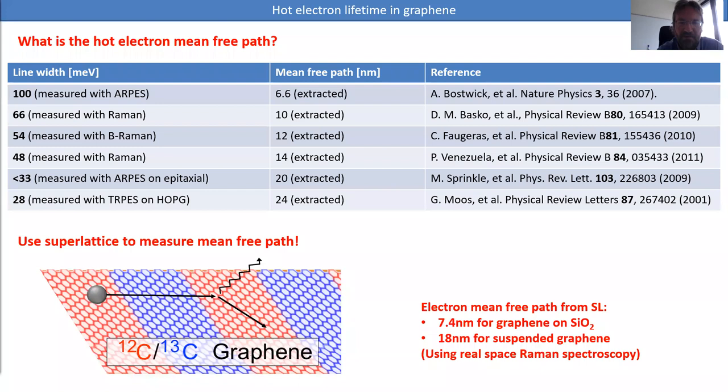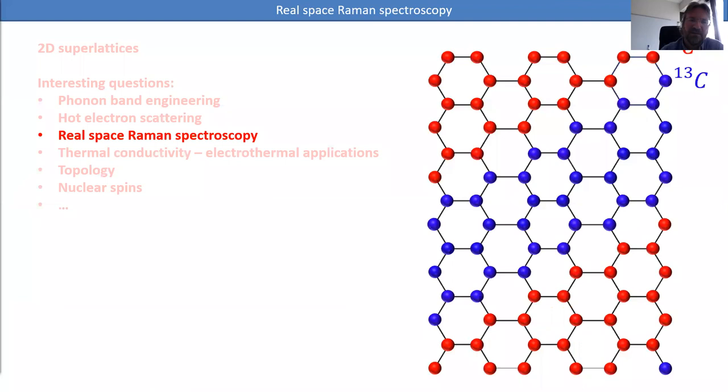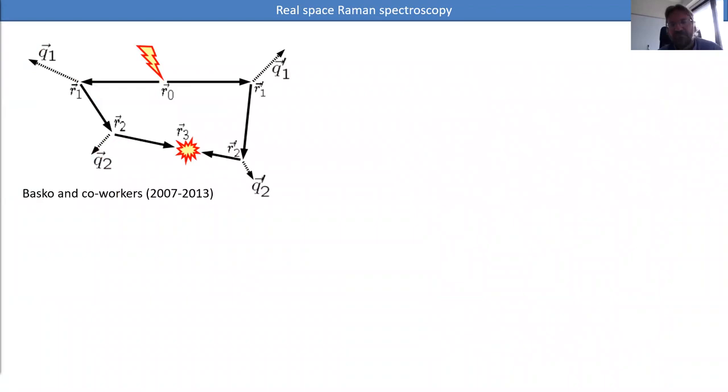What I want to show is that there's actually a way to measure directly this electron mean free path using these superlattices in graphene. We get two numbers depending on whether graphene is on silicon oxide or suspended.